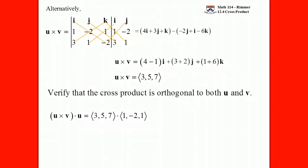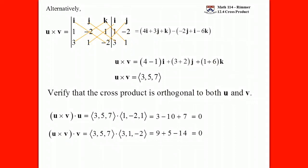So if I dot this with u, I should get 0, and we do — we get 3 and negative 10 and positive 7. If I dot it with v, I should get 0, and we do. We get 9 and 5, and then we take away 14. So this vector that we get out is orthogonal to both of the original two vectors. We haven't talked about properties of it or how it's associated to the angle between the vectors, but we will now. By the time we finish class today, you should have enough to finish that first assignment on the dot product and cross product and introduction to vectors.